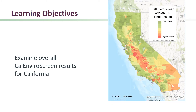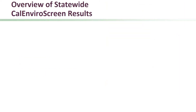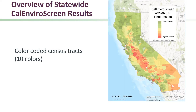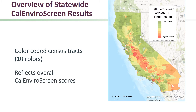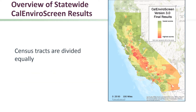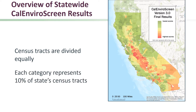In this module, we'll look at the overall CalEnviroScreen results for the entire state of California. This map shows all of the census tracts in California color-coded to reflect their overall CalEnviroScreen score. Each census tract is sorted into one of ten colors, or categories, divided equally so that each category represents 10% of the state's census tracts.